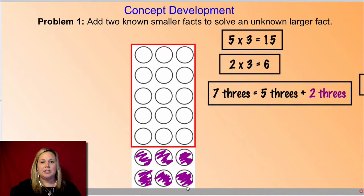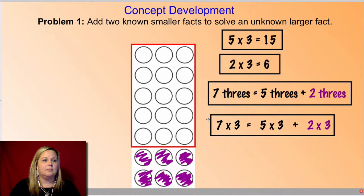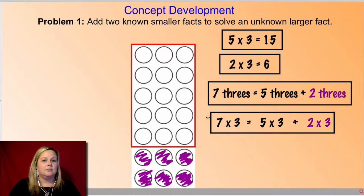Remember the rows, seven rows of three is the same as five rows of three plus two rows of three. Same exact thing. So we already wrote the totals for the two parts of our array. Now let's add those to the total for the whole array.